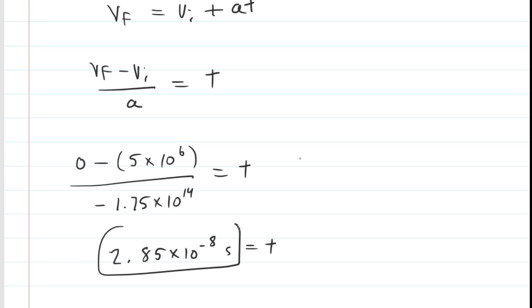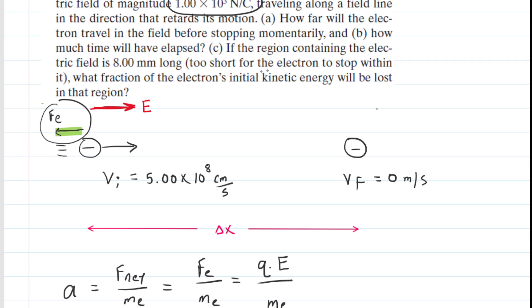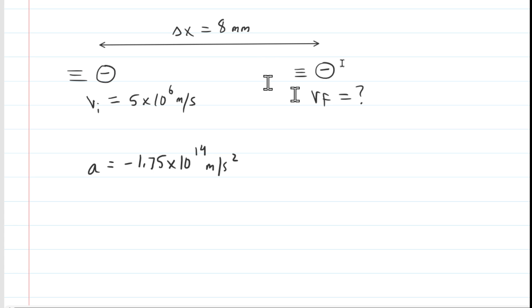Finally, Part C, which asks us, if the region containing the electric field is 8 millimeters long, which is too short for the electron to stop within it, what fraction of the electron's initial kinetic energy will be lost in that region? So let's try to come to grips with that question by just sketching a picture. Now, the electron is still in the same electric field, so still experiences the same electric force, which means it still has the same acceleration, same initial velocity, but this time it's only traveling 8 millimeters.